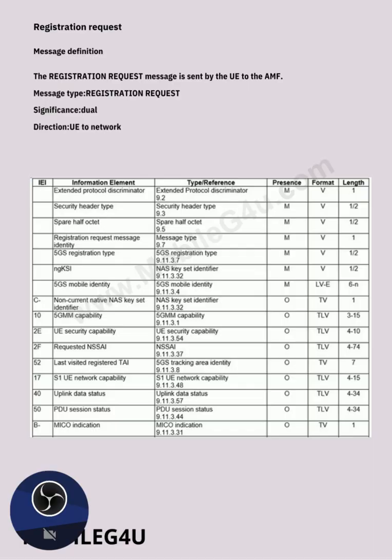The Registration Request message is sent from the UE to the AMF, so the direction is UE to network. Inside this message we have so many Information Elements (IEs). We also have different columns in this table — we have Presence, Format, Length, Type, and here is the Information Element column, which we also call IE.